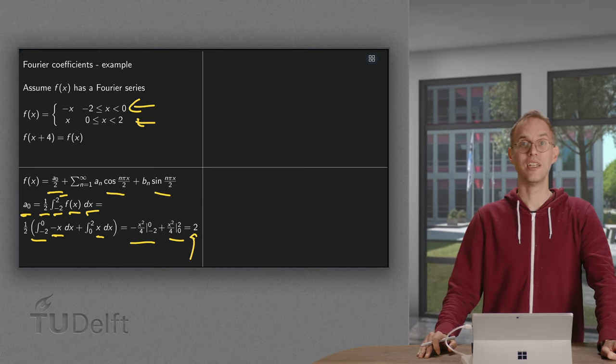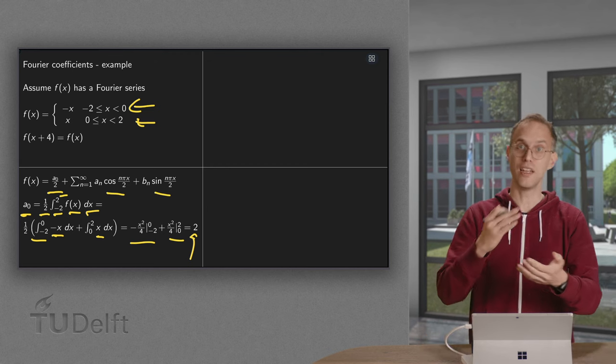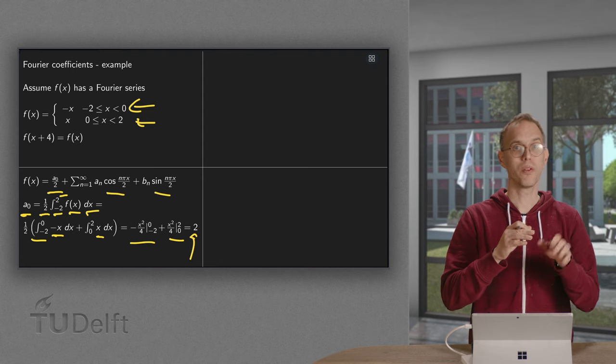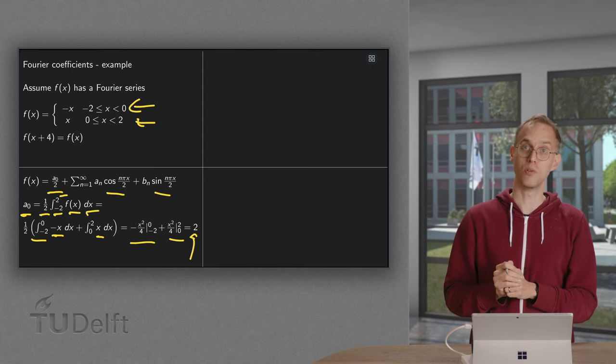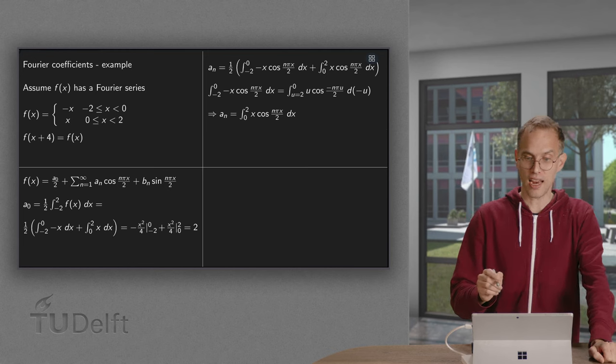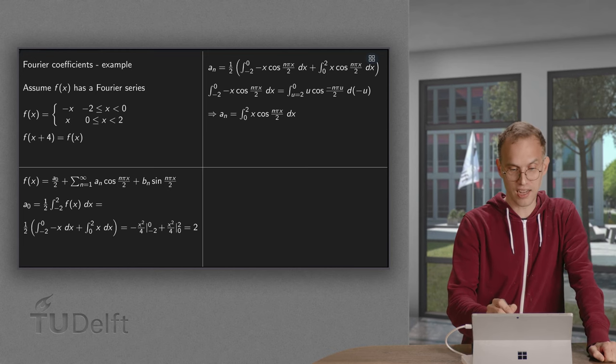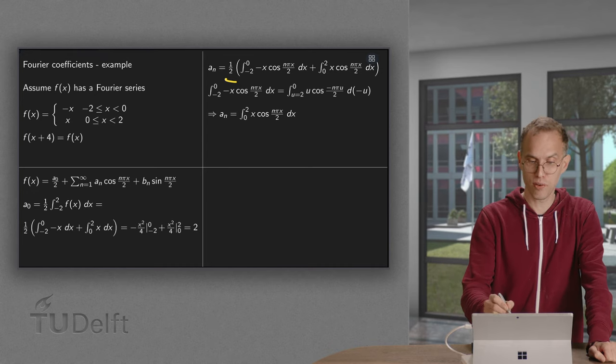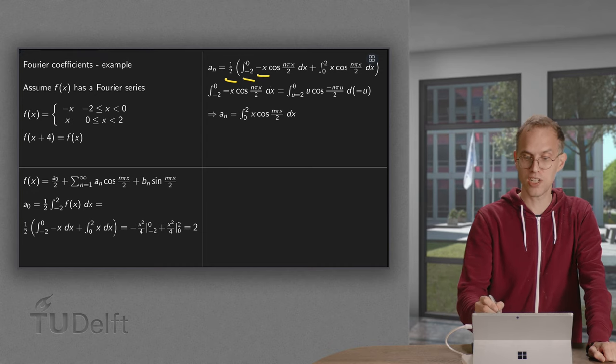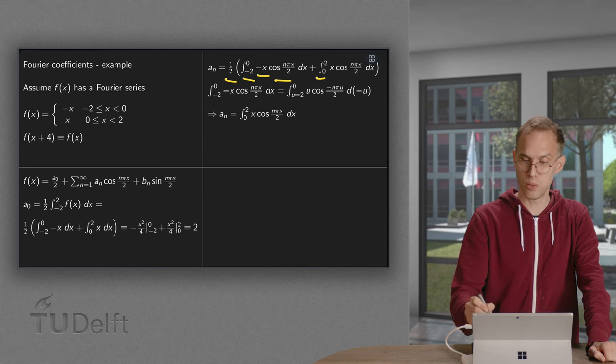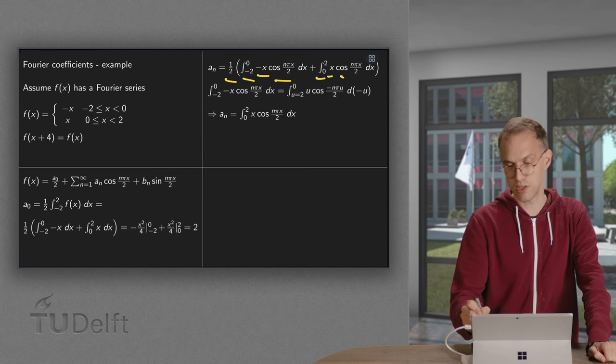Now we only need the an and the bn. Well fortunately we can compute all the an in one go, and we can compute all the bn in one go. So the an, how do we compute them? We get again the one half, and again we have to split up the integral. Minus 2 to 0 with the minus x, and now with cosines instead of 1. And from 0 to 2 with the x and again with the cosines.